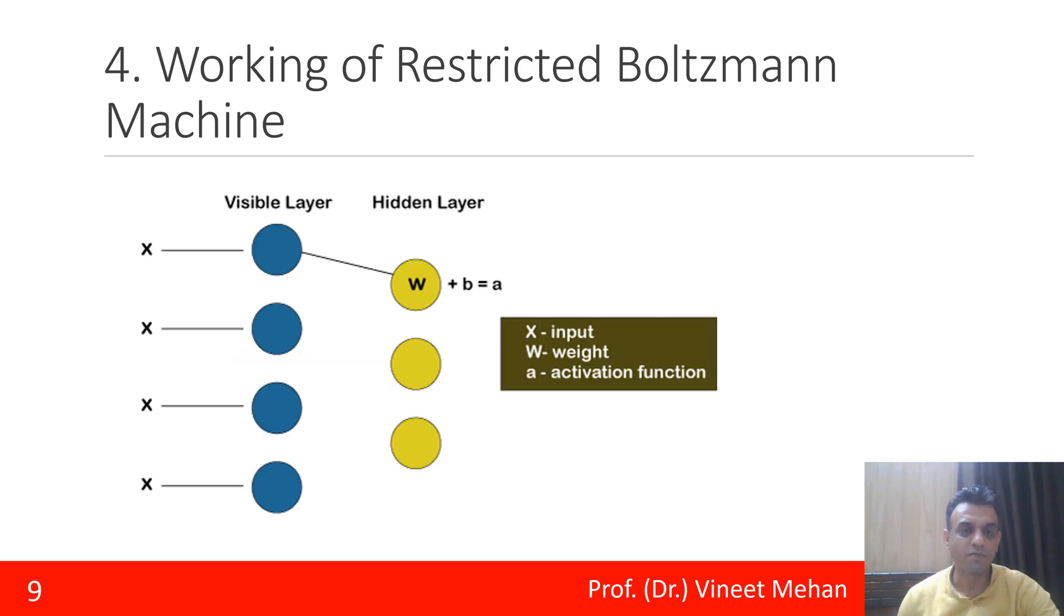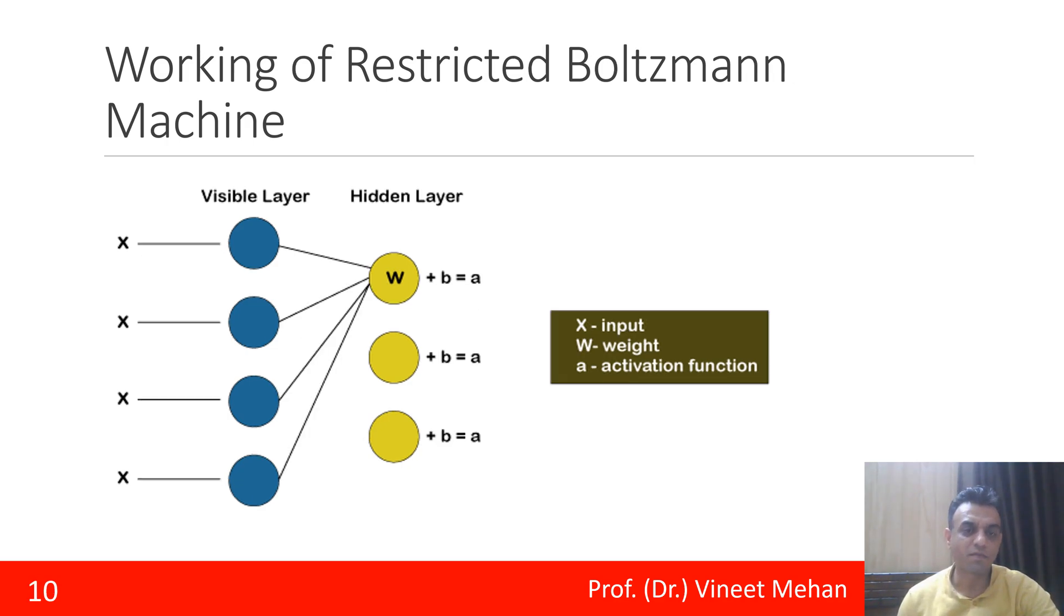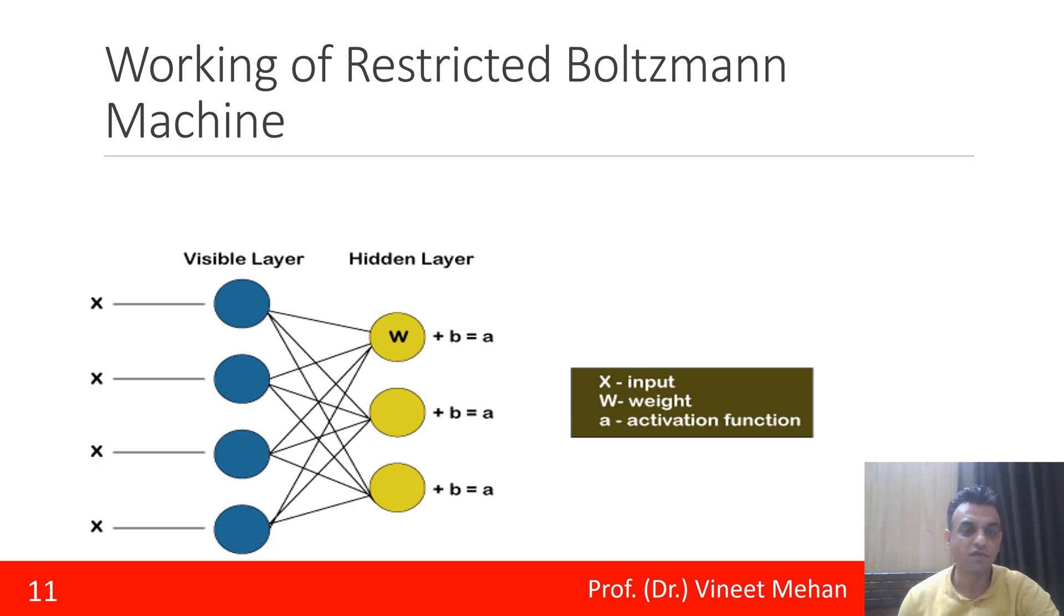Now how does this RBM work? Say you have this visible layer connected to the hidden layer. Input X is given to the visible layer, and W is the weight. So input multiplied by weight plus bias is added, and then an activation function is applied. This happens for the first neuron in visible layer and first neuron of the hidden layer. Similarly, all the inputs are applied and we can calculate the result at the hidden layer. Fully connected connections are there between visible layer and hidden layers, so there are multiple probable combinations that will be formed.